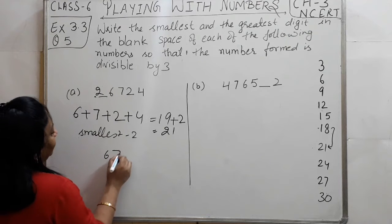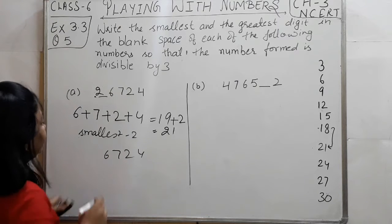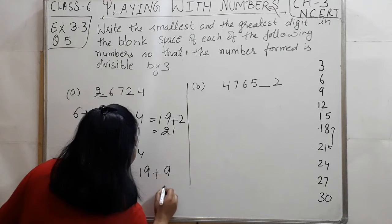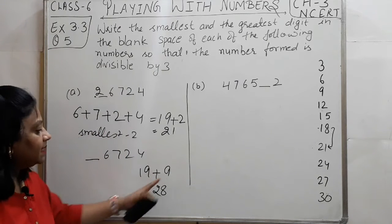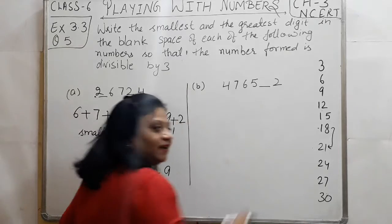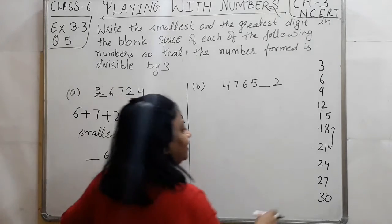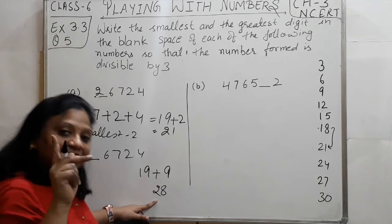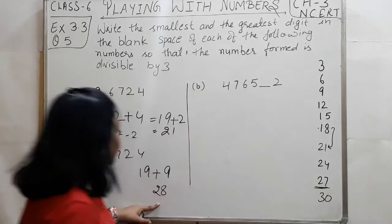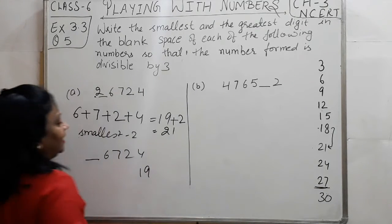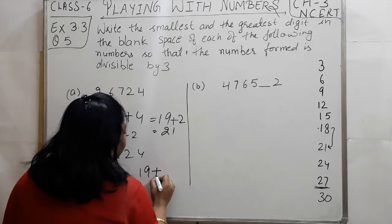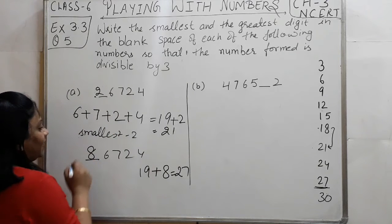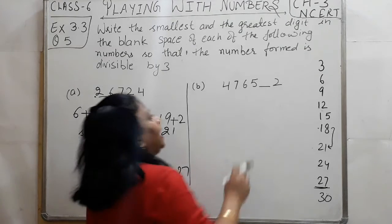Now let's find the greatest digit. The greatest single digit is 9. If I add 9 to 19, I get 28. But 28 does not appear in the table of 3. 30 is too large and would require a digit greater than 9, which is not allowed since we need a single digit. So I need 27 — and 27 minus 19 equals 8. Therefore, the greatest digit here is 8.